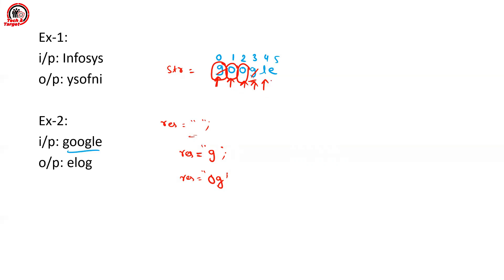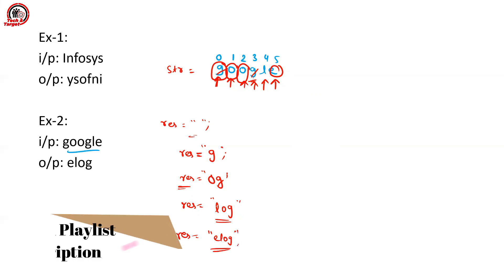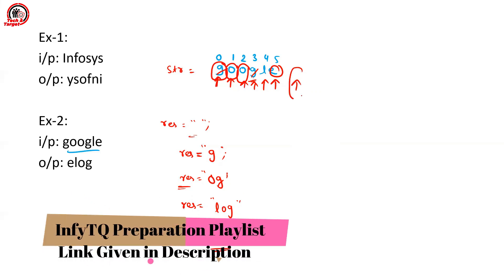Next letter is 'L', which is not in the result string, so we add it at the beginning — result becomes 'LOG'. Next letter is 'E', also not in the result string, so we add it at the beginning — result becomes 'ELOG'. The string input is completed, so we print 'ELOG' and exit the program.